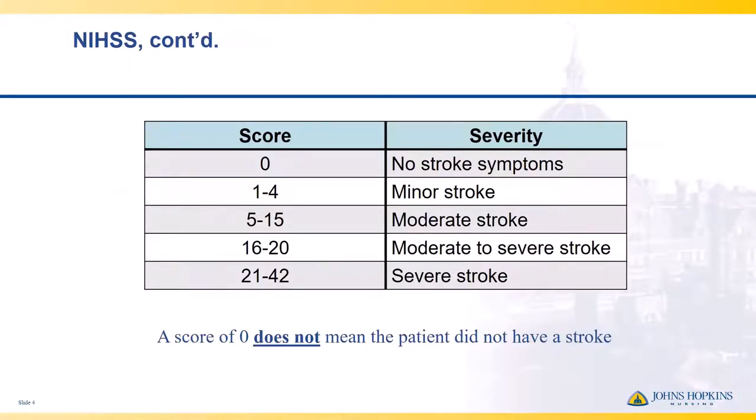As far as the scoring for the NIHSS, a patient who scores a zero doesn't mean that they didn't have a stroke — it just means they have no stroke symptoms. A minor stroke will be a score from one to four, increasing to moderate, and then finally to a severe stroke when you hit 21 or more points.